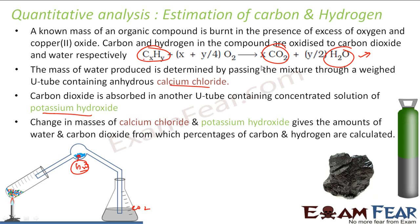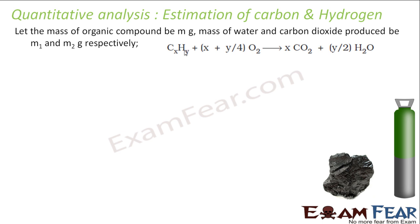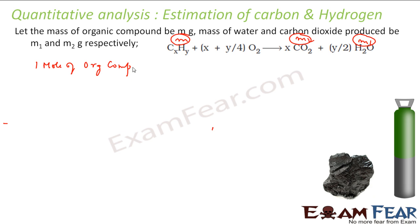One mole of CₓHᵧ gives X moles of carbon dioxide. So let me write this in the slide now. Suppose we have M gram of organic compound taken, and I got M1 gram of water and M2 gram of carbon dioxide. So one mole of organic compound will give X moles of CO₂ and Y/2 moles of H₂O. This is what we can deduce from the balanced equation.